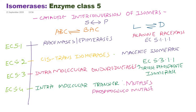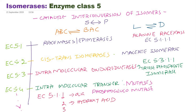Under enzyme class 5, the third digit in the EC number indicates the substrate type: the third digit 1 stands for amino acid substrates, the third digit 2 stands for hydroxy acid substrates, and the third digit 3 indicates that the substrate is a carbohydrate — as in triose phosphate isomerase.